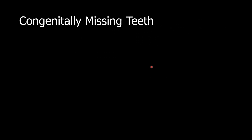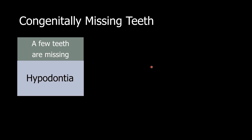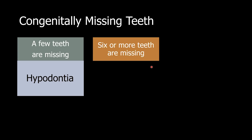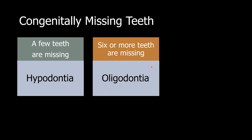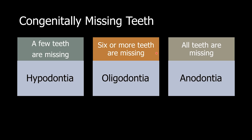Congenitally missing teeth can be classified into three categories. If we have a few teeth that are missing, we call this hypodontia. If we have six or more teeth that are missing, we call this oligodontia. If all the teeth are missing, then it is called anodontia.